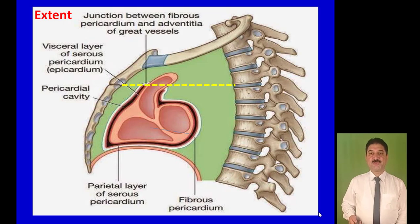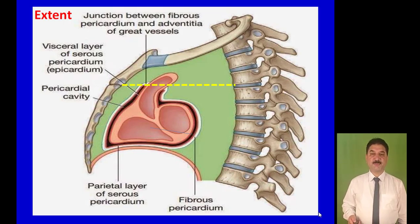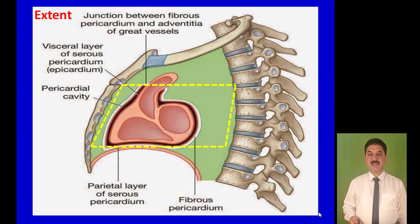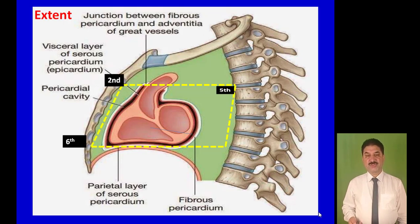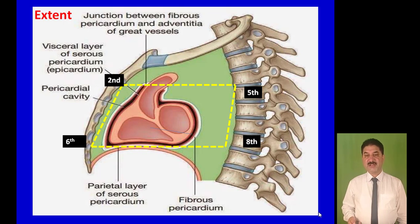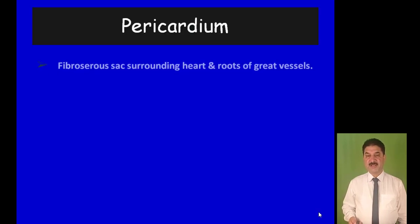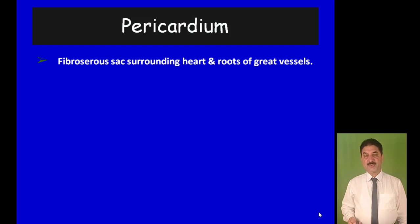To explain the anterior and posterior relations of the pericardium, let us go to this slide. Inferiorly, it is fixed with the central tendon of the diaphragm. Anteriorly lie the second to sixth costal cartilages, and posteriorly there are the middle four thoracic vertebrae, that is T5 to T8.